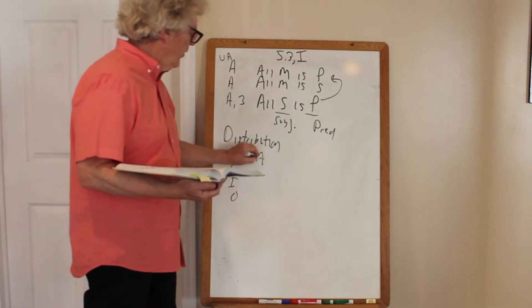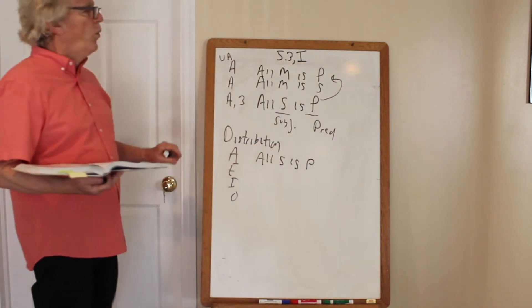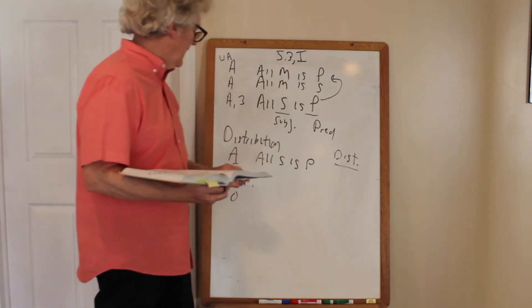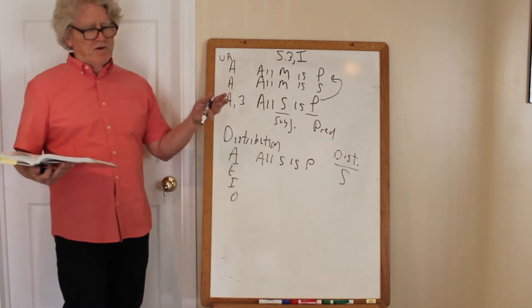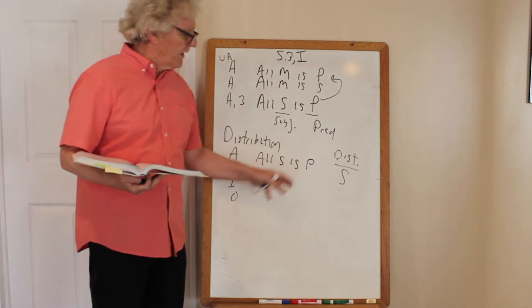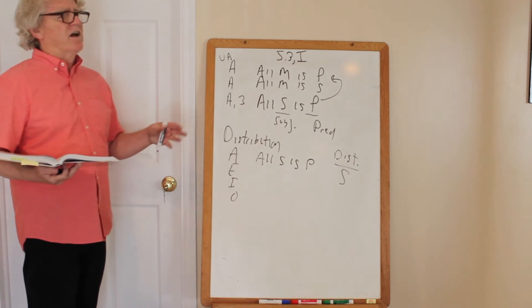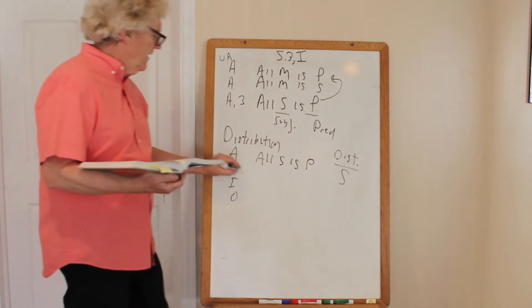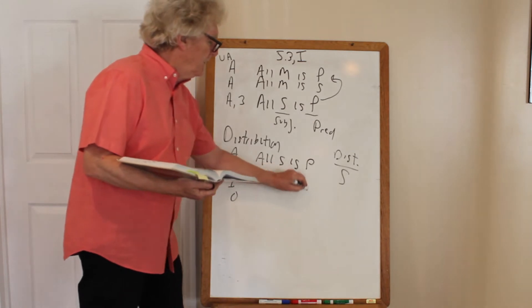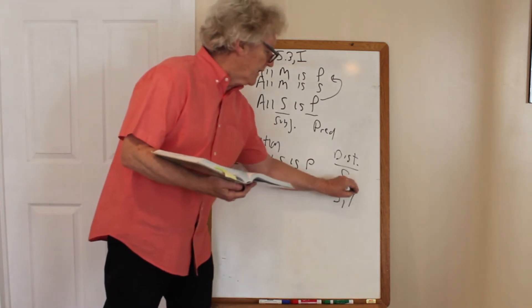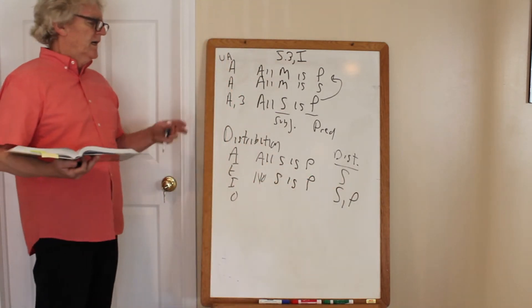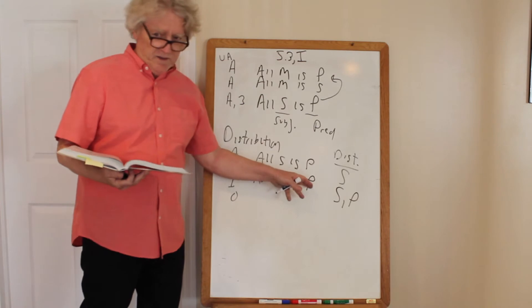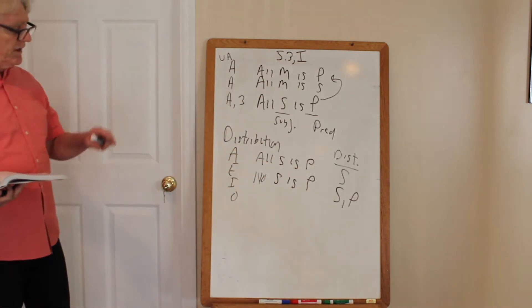For a universal affirmative — all S is P — what gets distributed is the S term, because distribution means you're referring to all members of a class. We're not saying all P is S; we're saying all S is P, so S is distributed. If you say 'all tigers have stripes,' you're distributing tigers, not stripes. For E, universal negative — no S is P — both the subject and predicate are distributed. No S is P says all these S's are not those P's, and all these P's are not those S's.